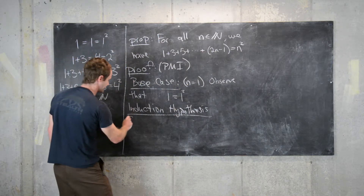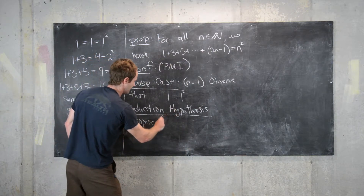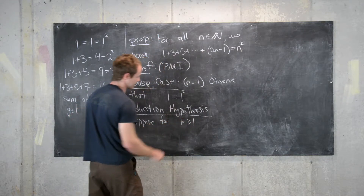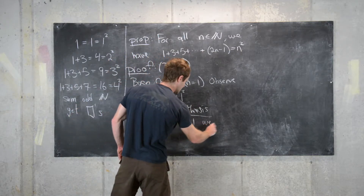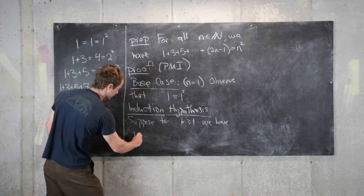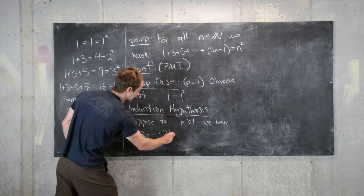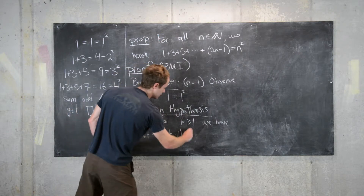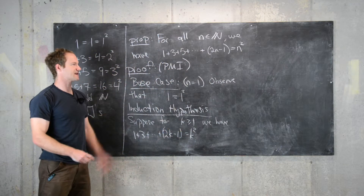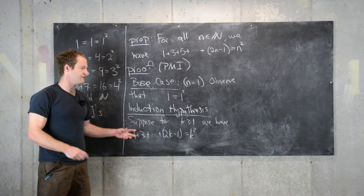Next we make an induction hypothesis. Suppose for some arbitrary k greater than or equal to 1, we have 1 plus 3 plus dot dot dot plus (2k minus 1) equals k squared. That is our induction hypothesis.